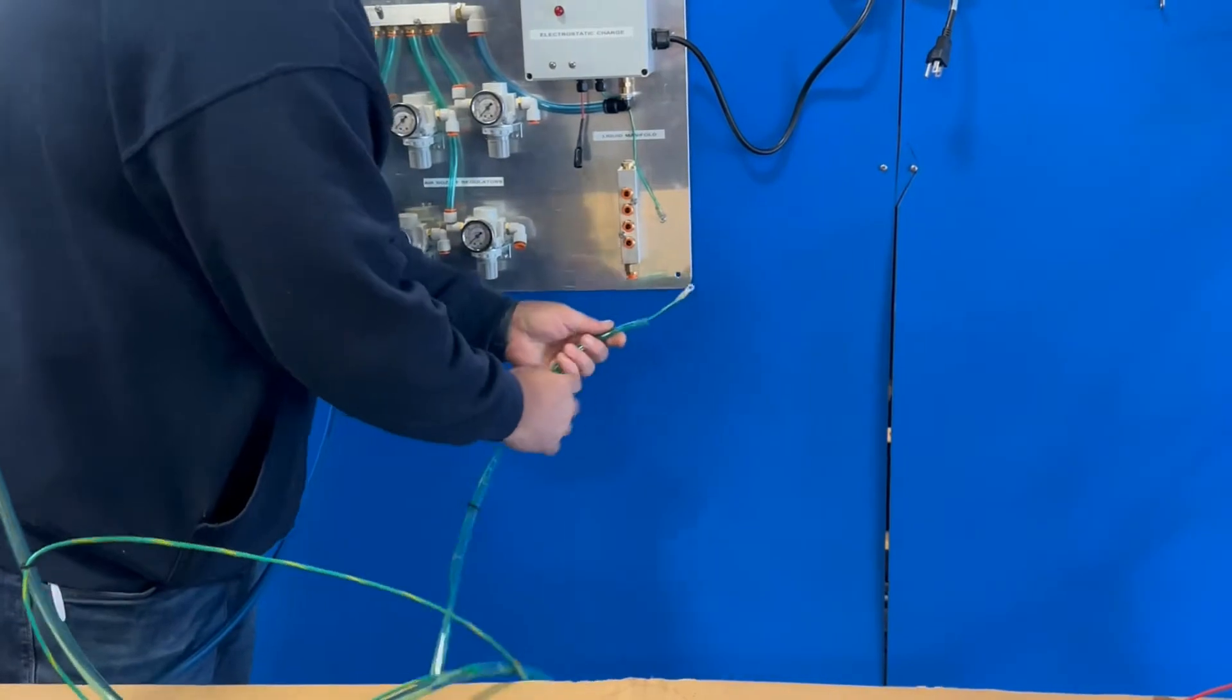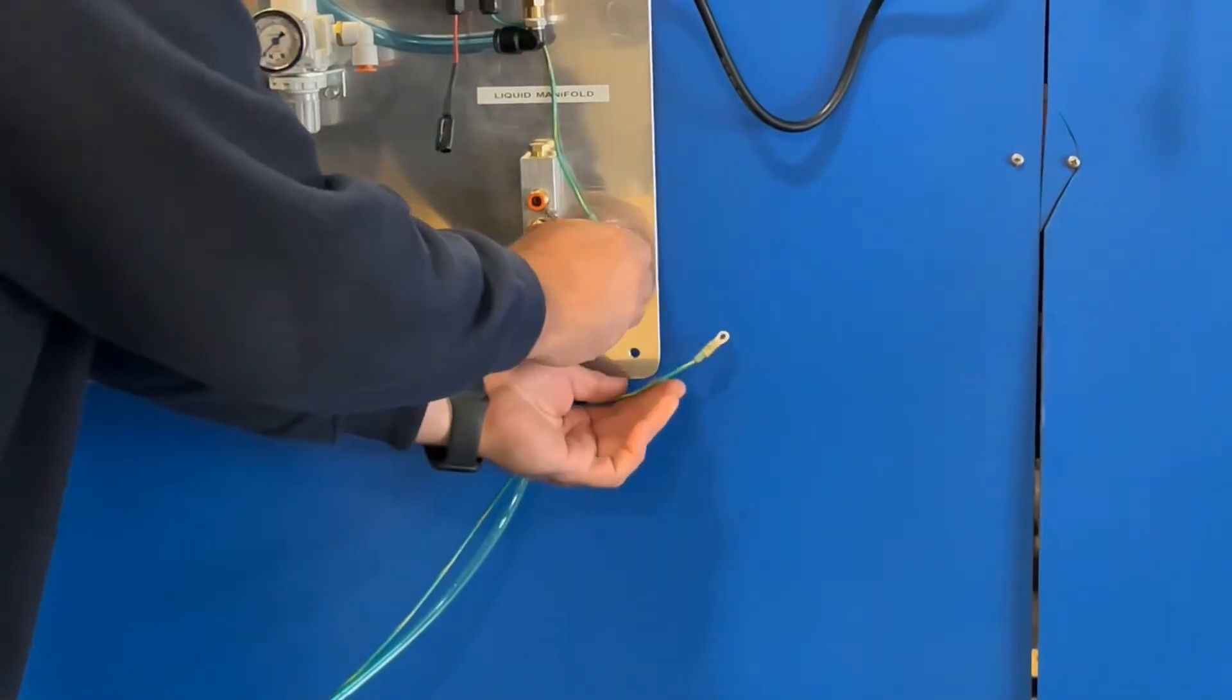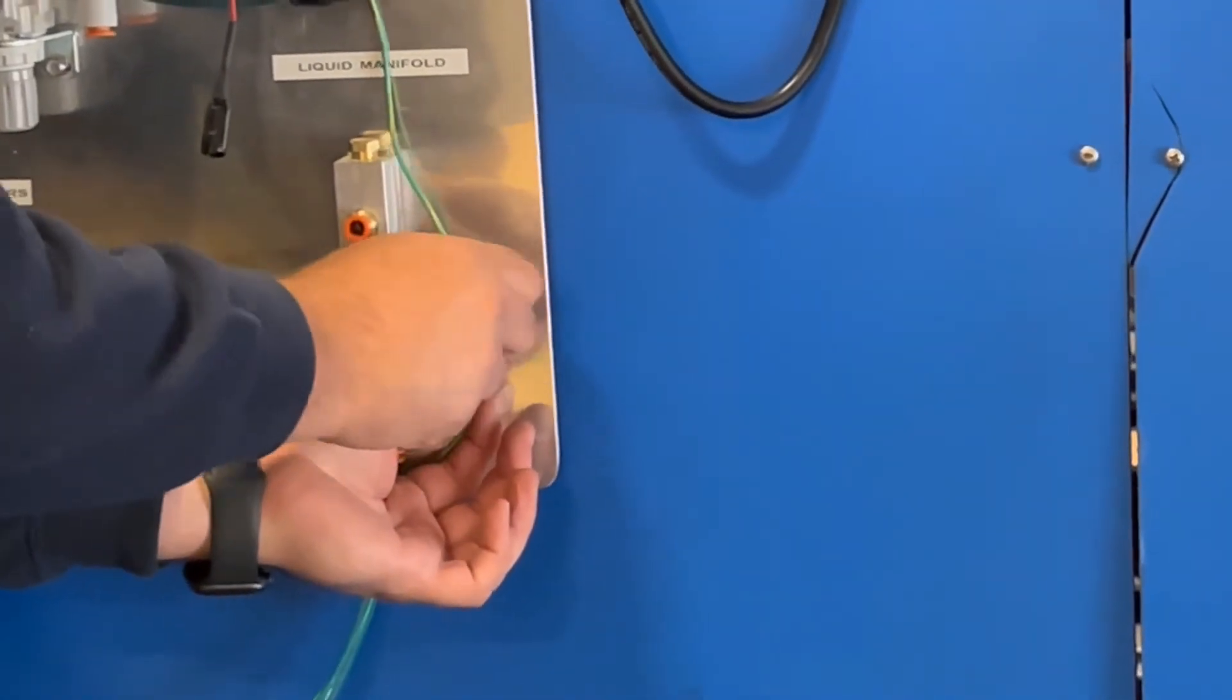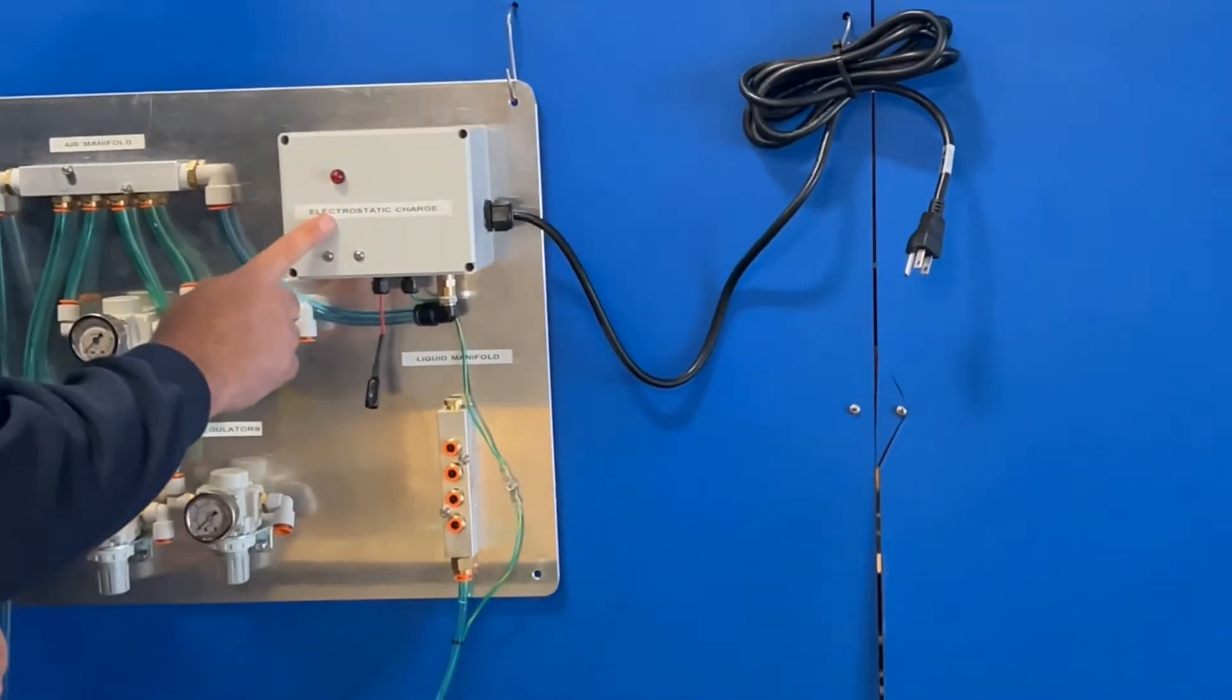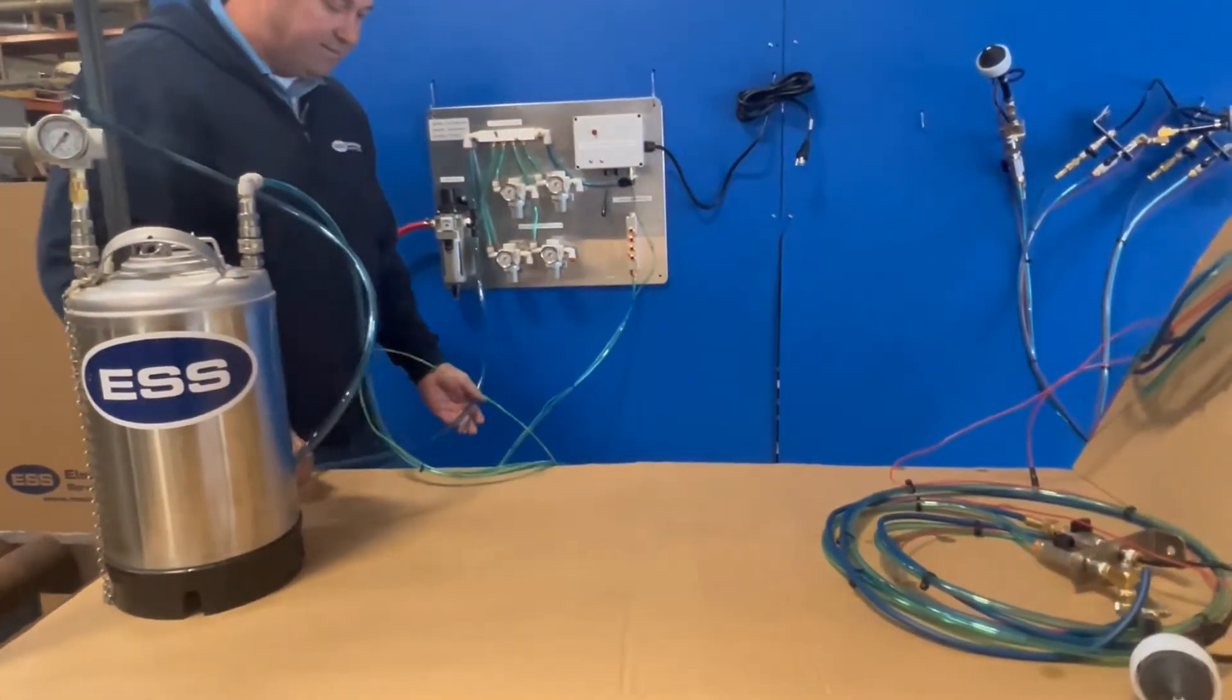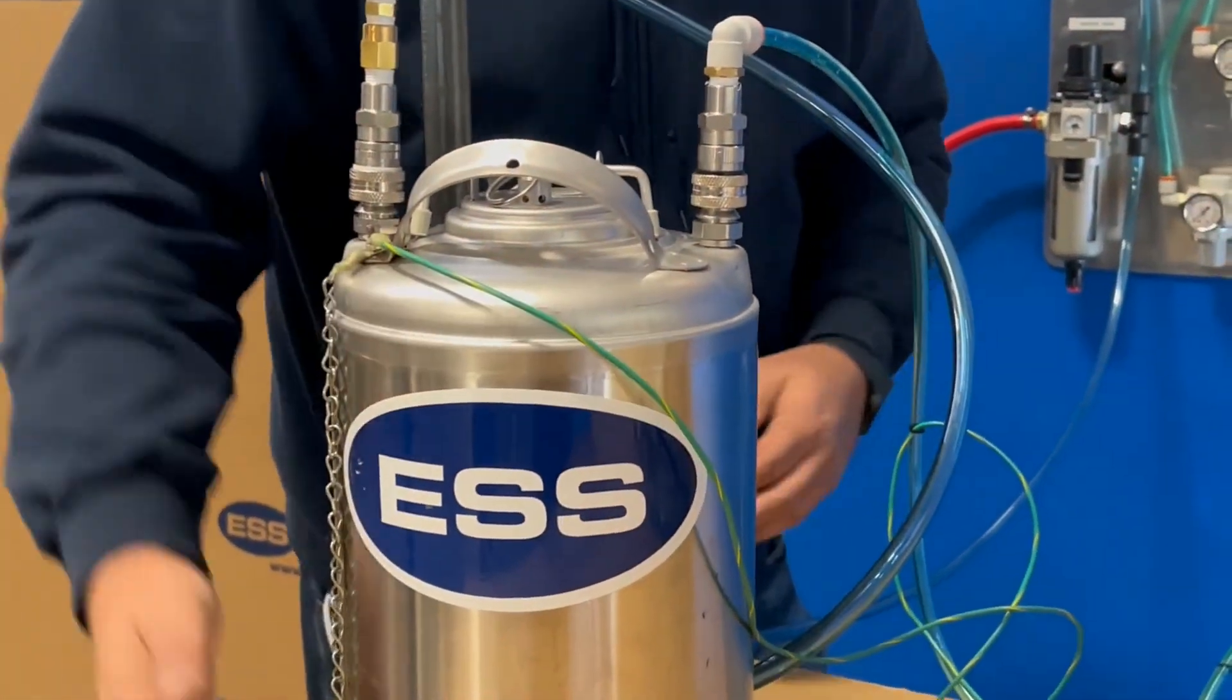We'll hook it up to the bottom of the liquid manifold right here. Again, it's just a push lock fitting. Then you hook up your ground wire because we want to have a common ground on the whole system. We'll be taking ground out of the wall through here, coming into this box, and we're grounding all of our liquid and our nozzles. We'll also have a line here for you to hook up the tank so that the tank is grounded since it's got a rubber base on it.